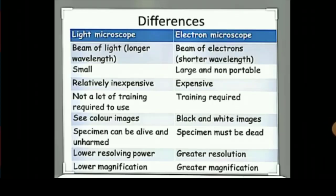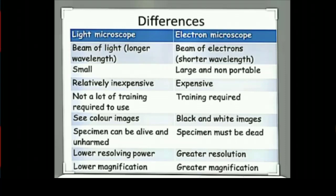Now the differences between light microscope and electron microscope: in a light microscope a beam of light is used, whereas in an electron microscope a beam of electrons is used. A light microscope is small, relatively inexpensive, and doesn't require a lot of training. Light microscope produces color images whereas an electron microscope produces black and white images. In a light microscope the specimen can be alive and unharmed, whereas in an electron microscope the specimen must be dead. The electron microscope has greater resolution and magnification than the light microscope.